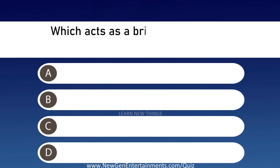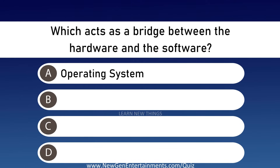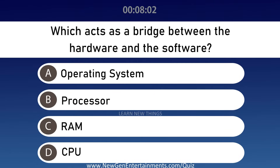Which acts as a bridge between the hardware and the software? Options are A: Operating System, B: Processor, C: RAM, and D: CPU. Answer is Option A, Operating System.